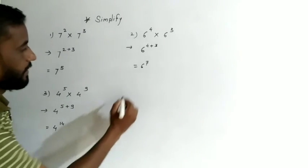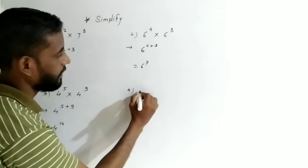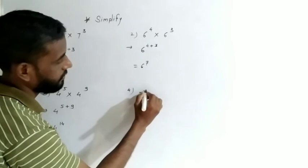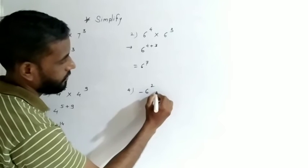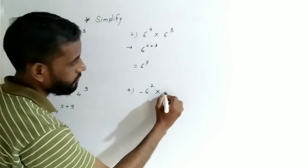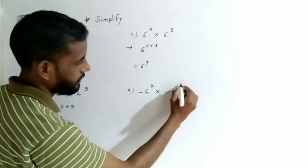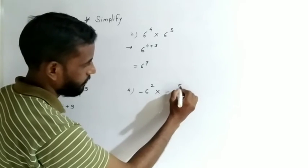Fourth problem: minus 6 raised to the power 2 into minus 6 raised to the power 5.